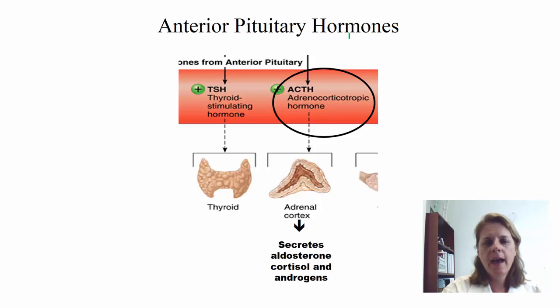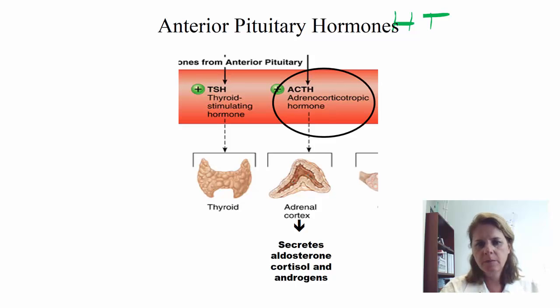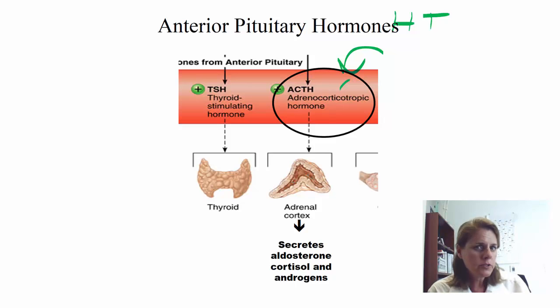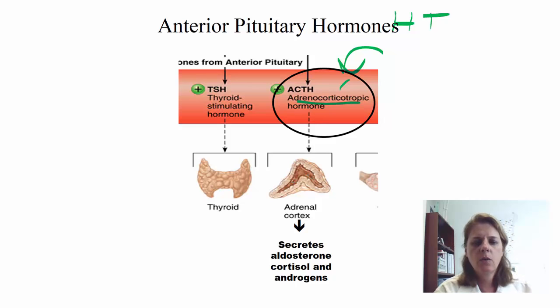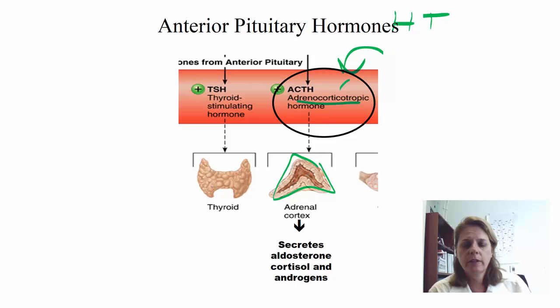Think about the hypothalamic axis: the hypothalamus stimulates the anterior pituitary to release ACTH, which is adrenocorticotropic hormone. This part of the lecture is talking about what's going on in the cortex — adrenocorticotropic — so the hypothalamus, the anterior pituitary making ACTH, going to the cortex of the adrenal gland, which will secrete aldosterone, cortisol, and androgens.